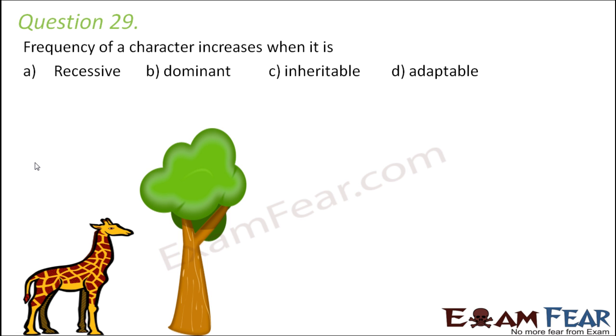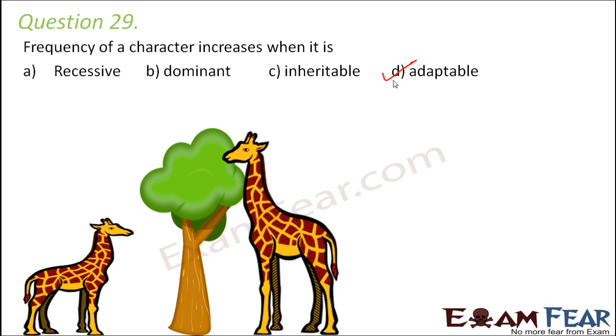Question number 29. Frequency of a character increases when it is recessive, dominant, inheritable, or adaptable? This obviously increases when it is adaptable. Why? Because as per Darwin's theory, variations are continuous. Variations keep happening all the time. But only those variations which are helpful in adaptation of an organism towards its surroundings would be passed on to the next generation. Let's talk about the giraffe. So many variations keep happening in the life cycle of a giraffe, in the population of giraffes. One of those variations was this long neck. But this long neck proved to be something which helped the giraffe to adapt to its surroundings better, helped it to survive better. And that is why the long neck trait of the giraffe got passed on to the next generation. So the frequency of this character, frequency of the long neck character, increased when it is adaptable.